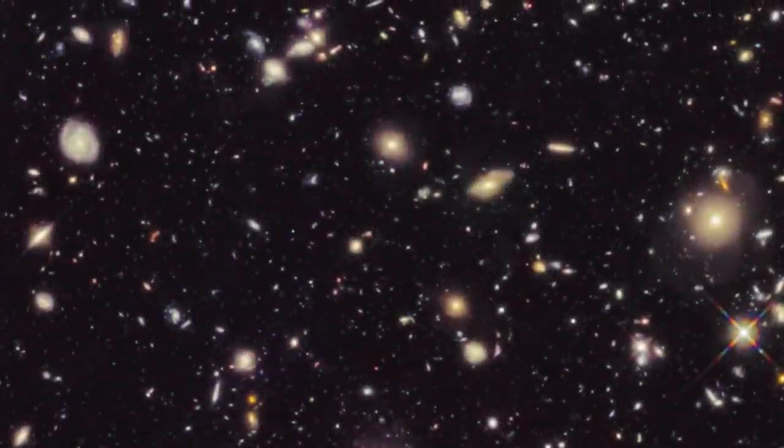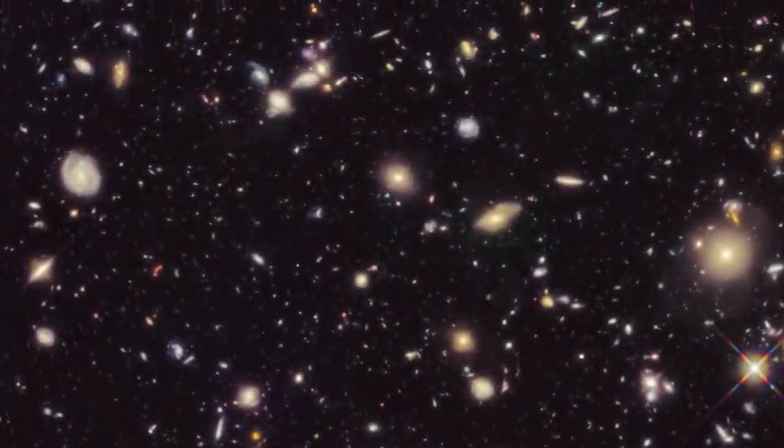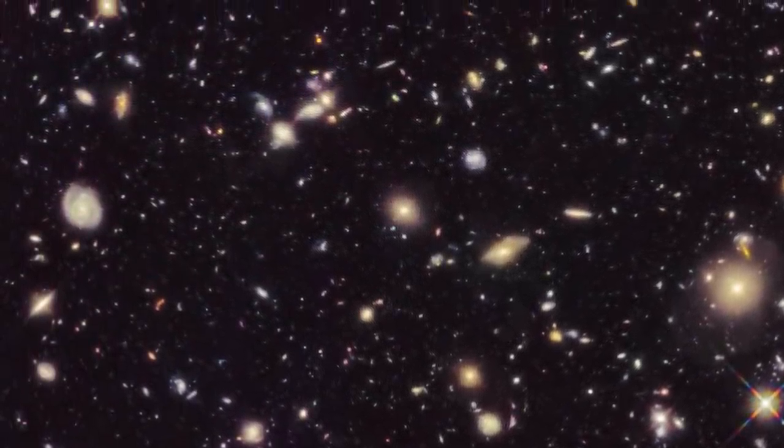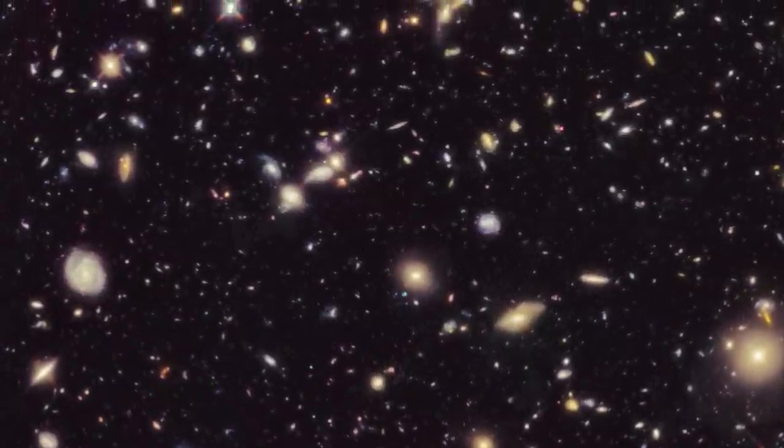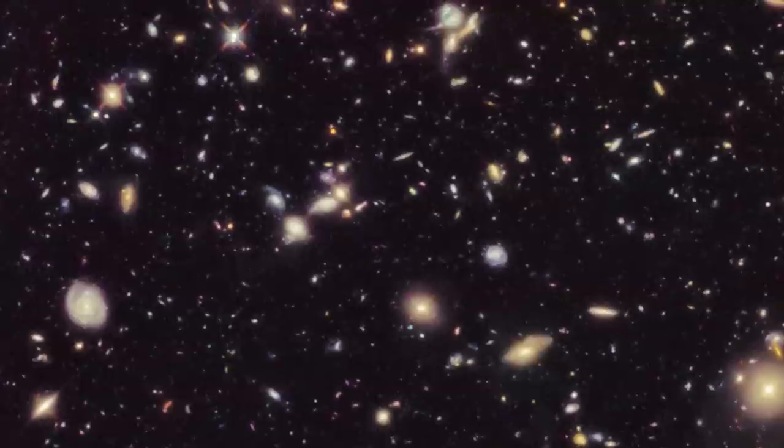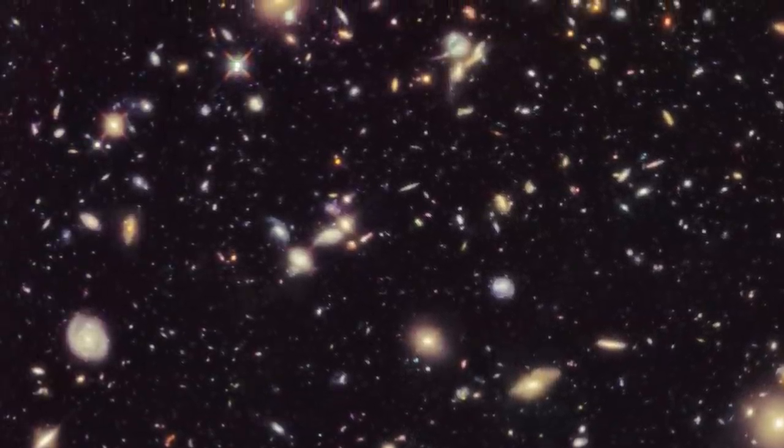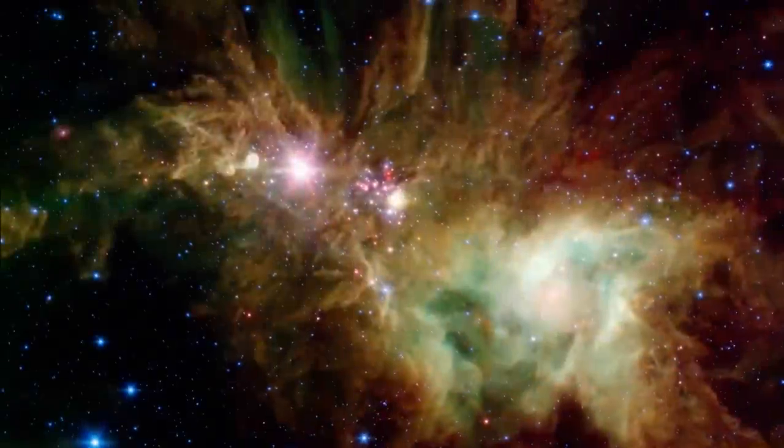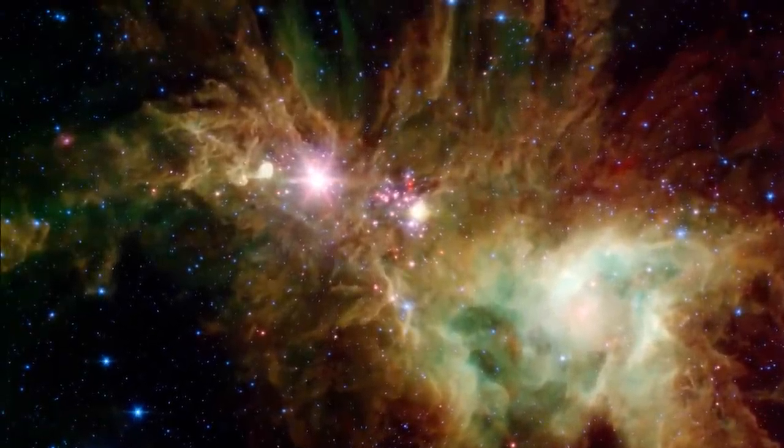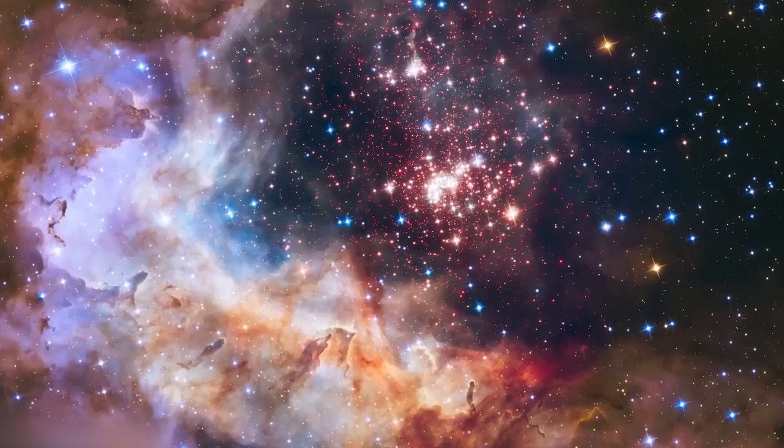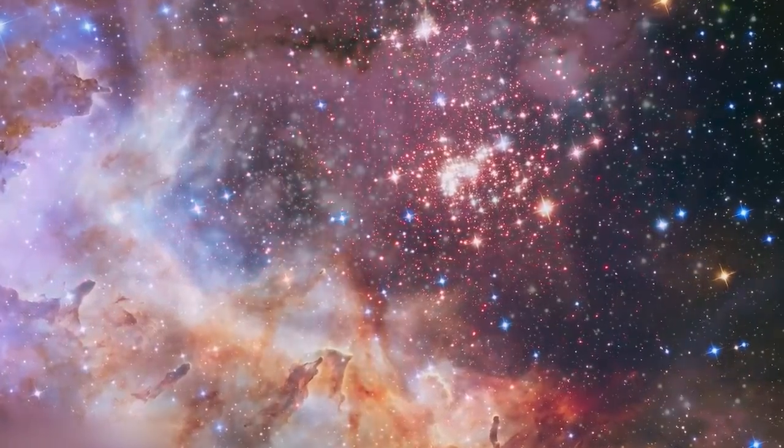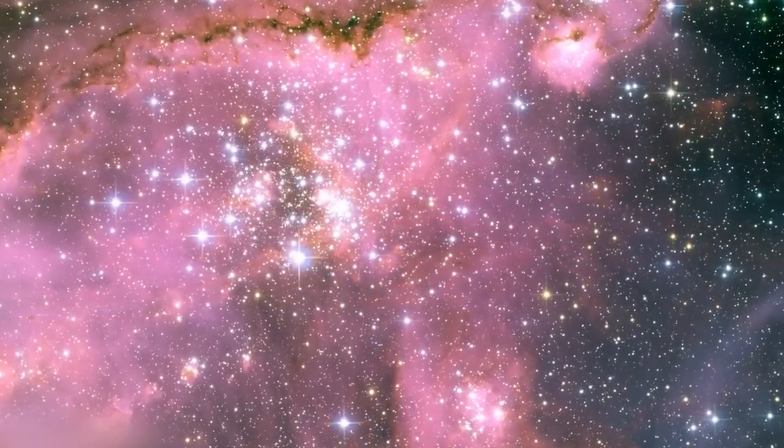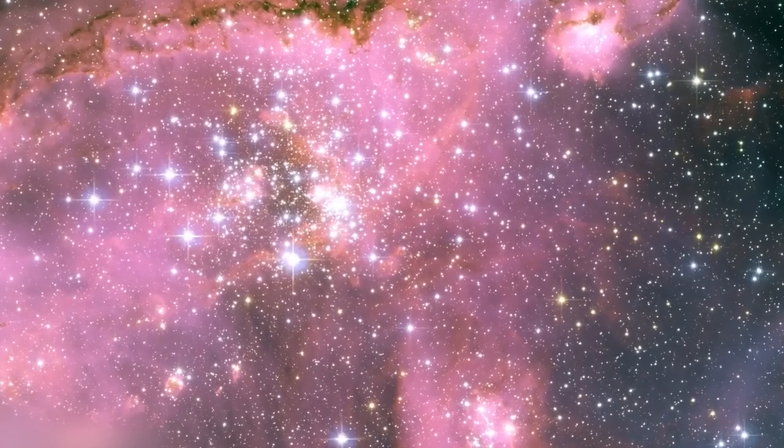But the transformation doesn't stagnate there. Further down the timeline, when the universe was around two billion years old, Webb has captured images of galaxies that are close relatives to those in our current cosmic neighborhood. Yet these galaxies, while resembling modern ones, bear unique characteristics. They are denser, and showcase a profusion of both dust and gas, indicating that the mechanisms of star formation were still fervently active.